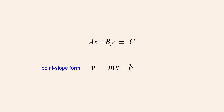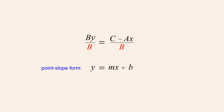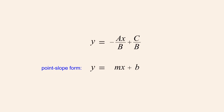We start by subtracting the term ax from both sides, which eliminates the ax term on the left. We then divide both sides by b and cancel the b's in the numerator and denominator of the fraction on the left. We then separate the fraction on the right into two fractions with the same denominator and swap the positions of the two fractions so that the x-term is on the left and the forms look more similar. Finally, we move the x in the numerator outside the fraction.